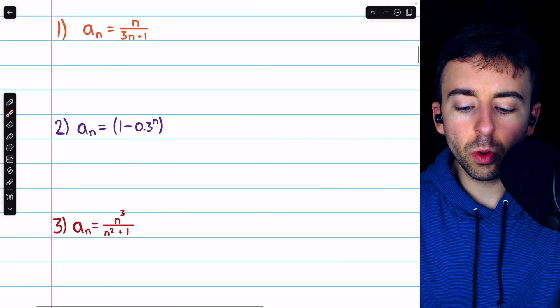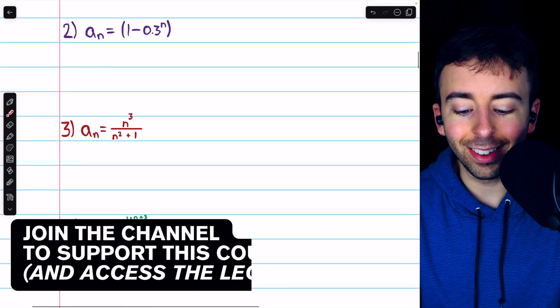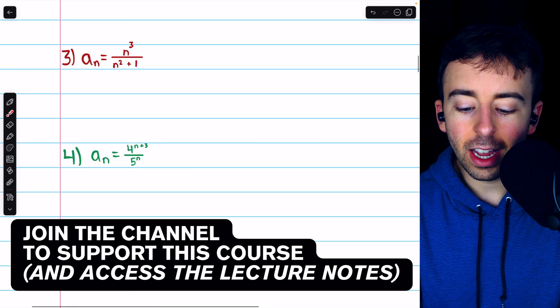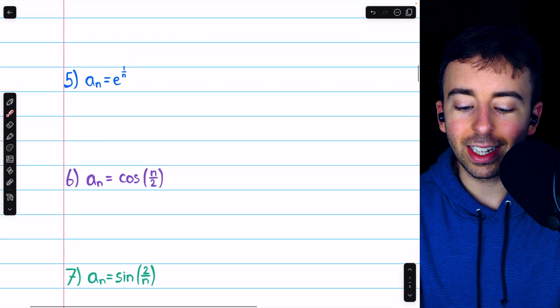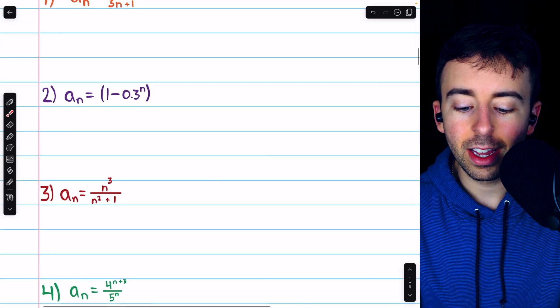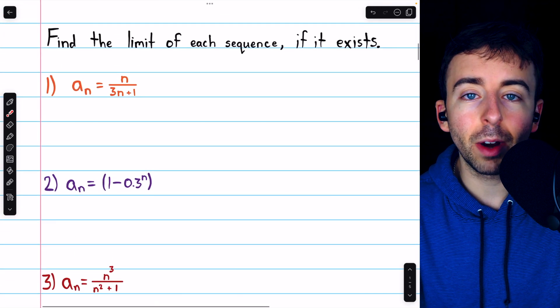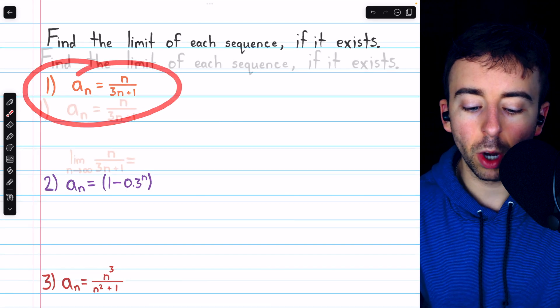The most important thing to be able to do with a sequence is to find its limit if it exists. We're going to do these seven examples of looking at a sequence and finding its limit if it exists. This video has chapters so you can skip around the problems as you please. Let's begin with problem one.